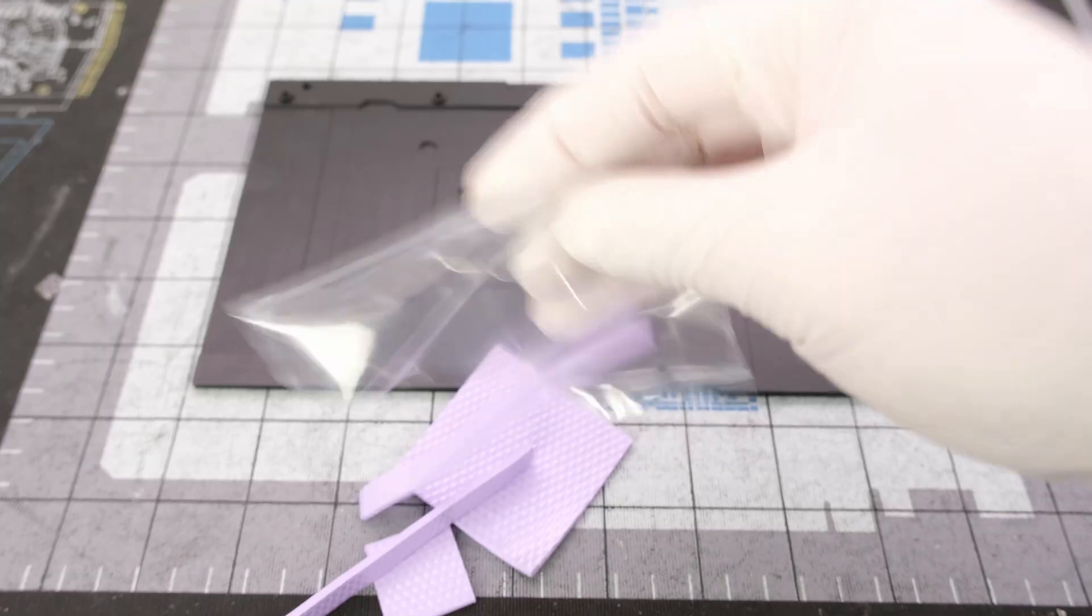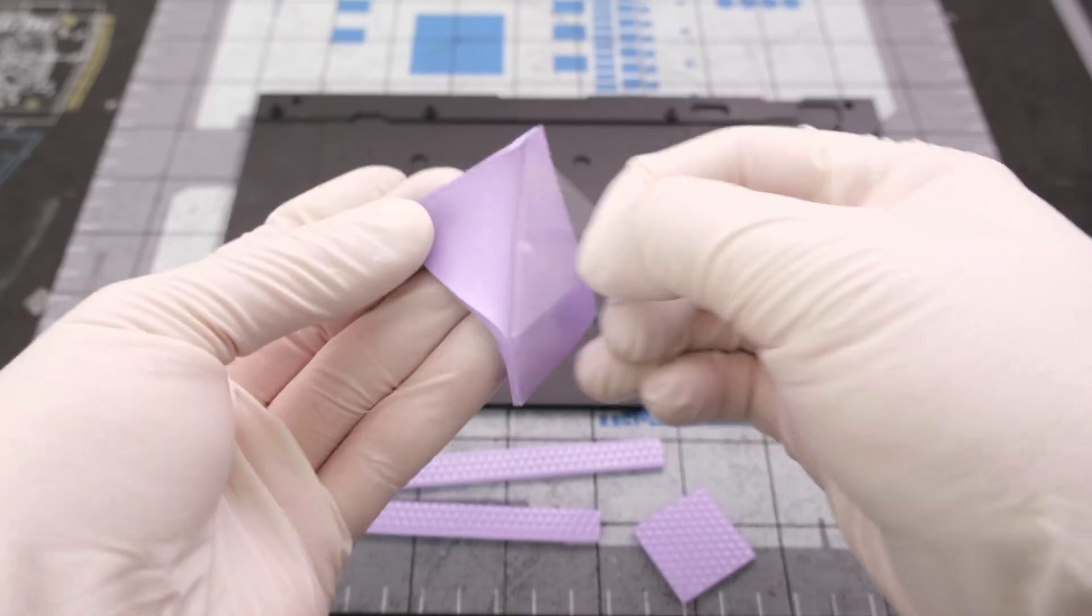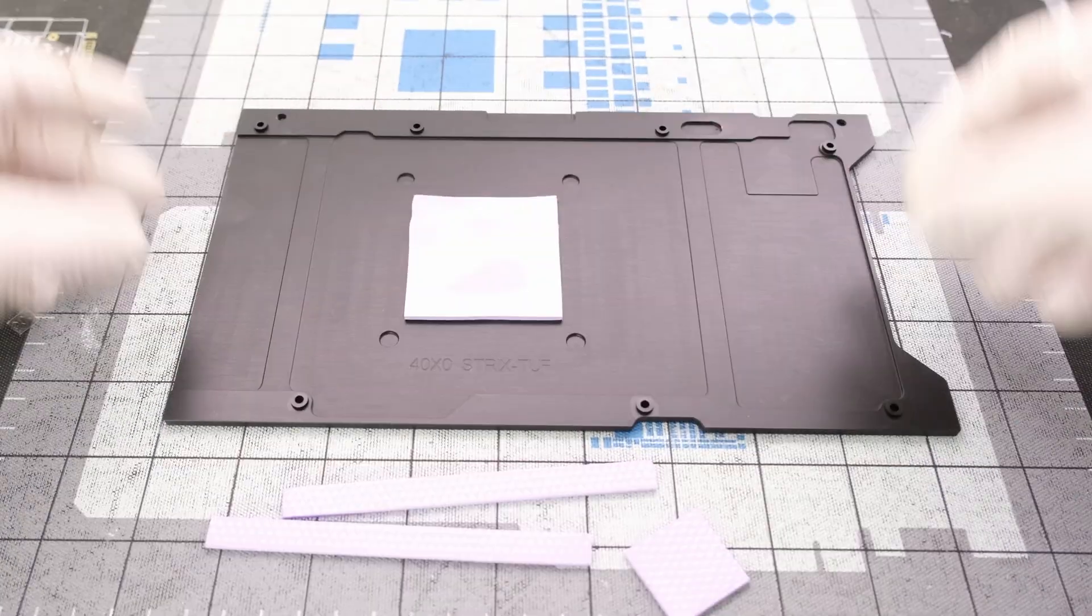The back side thermal pads are next, and both sides have plastic film to be peeled before placing the thermal pad directly onto the back plate.